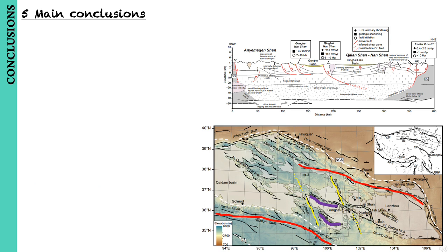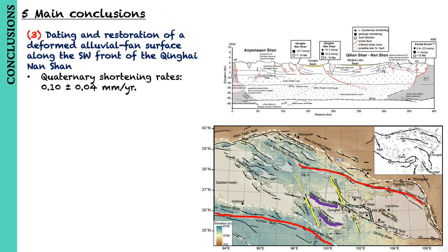Dating and restoration of a deformed alluvial fan surface along the southwest front of the Qinghai-Nanshan indicate that late Quaternary shortening rates are 0.10 plus or minus 0.04 mm per year. These rates are relatively slow and overlap with average Cenozoic shortening rates across the range.